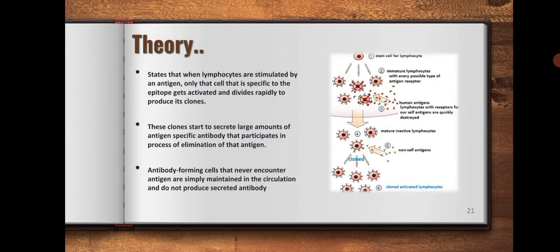The theory states that when lymphocytes are stimulated by an antigen, only that cell that is specific to the epitope gets activated and divides rapidly to produce its clones. These clones start to secrete large amounts of antigen-specific antibody that participates in the process of elimination of that antigen.